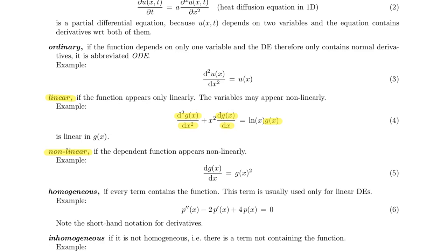It does not matter if there are other terms that are nonlinear in the differential equation like logarithm of x or x squared. Down here you see an example of a nonlinear differential equation because g of x squared is in this equation, and that is a nonlinear version of g of x. The derivative on the left side is linear but g of x squared on the right side is nonlinear.